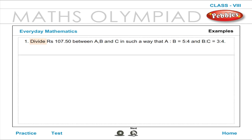Example: Divide Rupees 107 and 50 Paise between A, B and C in such a way that A is to B is equal to 5 is to 4, and B is to C is equal to 3 is to 4. Solution: